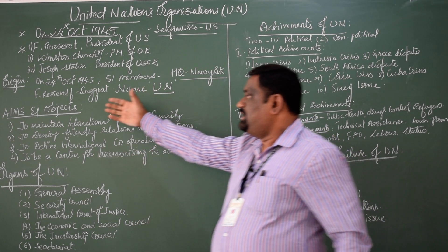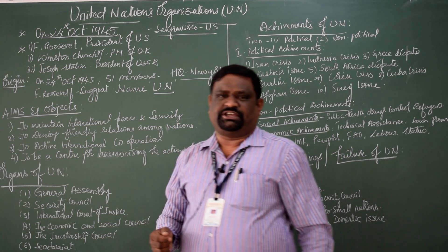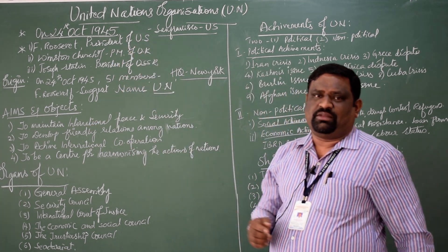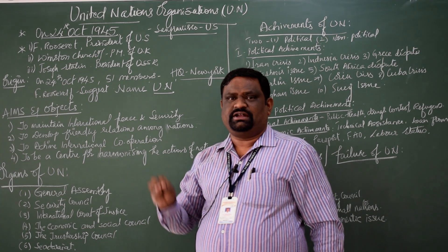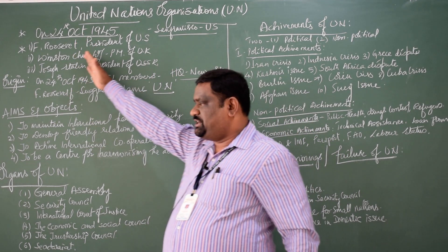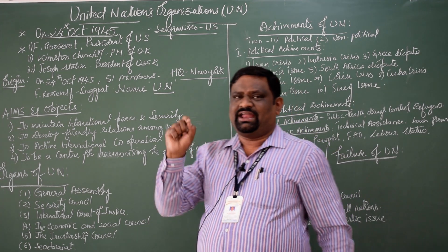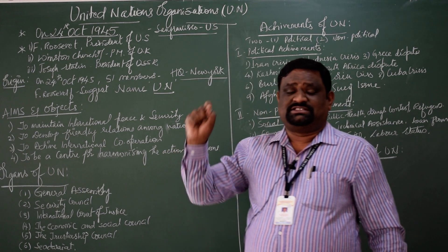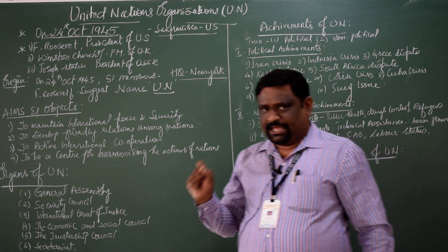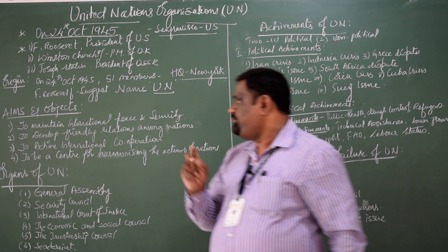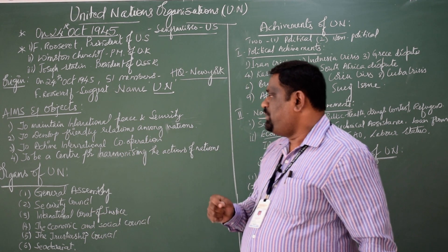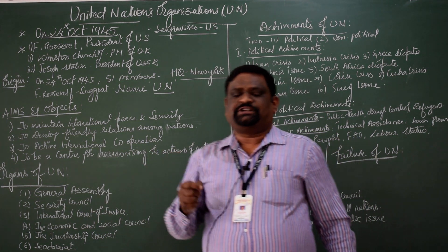Let us move on to the main aims and objectives of this institution called the World Parliament. There are four important objectives: number one, to maintain international peace and security; number two, to develop friendly relationships among the nations; number three, to achieve international cooperation among the member countries; and number four, to be a center for harmonizing the actions of the nations.